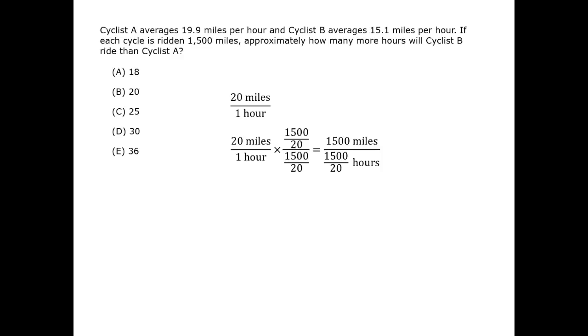15 over 20 times 15 over 20. This way, the 20s in the top cancel, and we are left with 1,500 miles in the top. Therefore, A will take 1,500 divided by 20 hours to travel this number of miles.